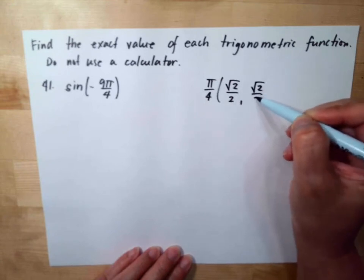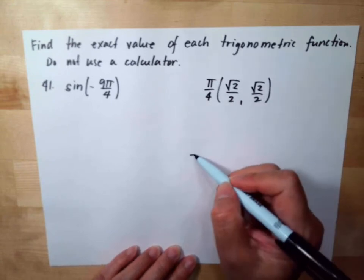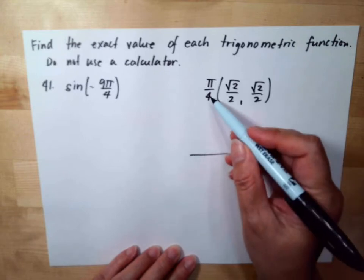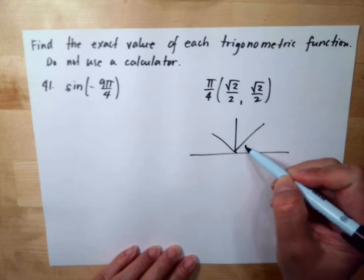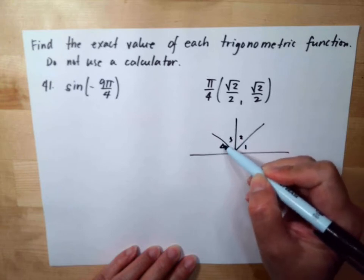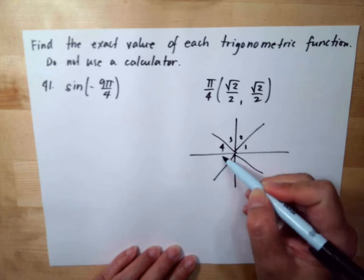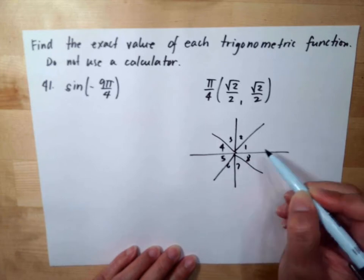So 9π over 4, meaning it is divisible by 4, so we divide this by 4: 1, 2, 3, 4. Divide this by 4: 5, 6, 7, 8.